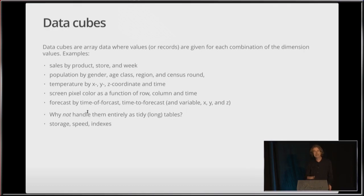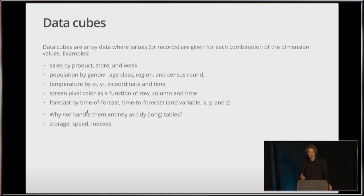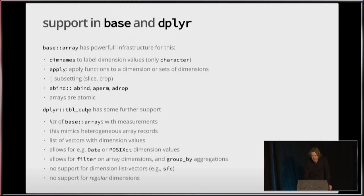Why not handle them entirely as tidy, as long tables, as Yaro would suggest? Well, there is storage speed and indexes, right? I welcome anyone to put a video stream into an XY time red, green, blue dataset. You don't do that. So you could do it, but it's not going to scale up really much, only for smaller subsets and so on. So what we do is basically working with arrays.